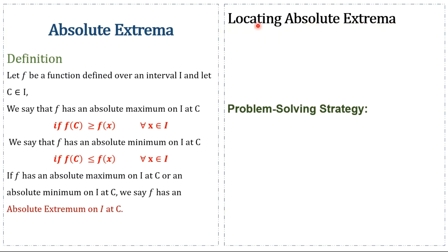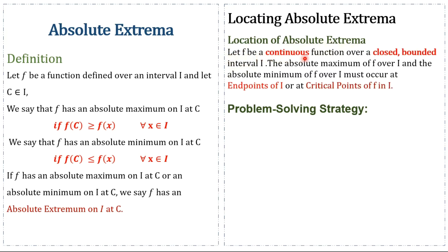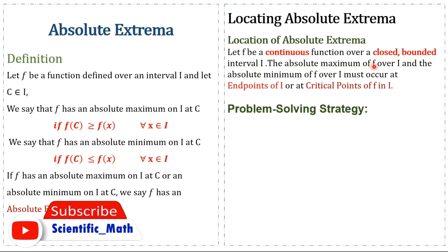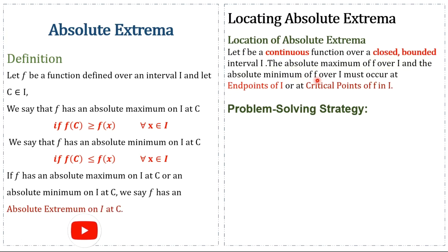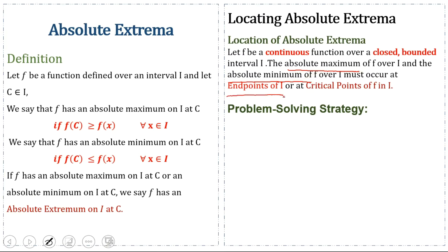Locating absolute extrema means finding the absolute maximum and minimum — that is, where does the absolute maximum and absolute minimum occur in the given interval. Let f be a continuous function over a closed interval I. The absolute maximum and the absolute minimum of f over I must occur at the endpoints of the interval I or at the critical points of f in I.